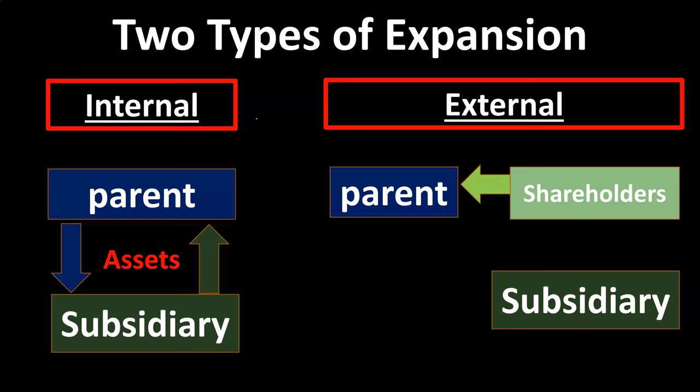We have one organization. The organization wants to grow and expand, possibly into a different section, segment, or a different industry, and therefore they're going to expand in some way, shape or form. Typically, we're thinking of the creation of a subsidiary type of relationship, in which case they might create a separate legal entity — giving assets and possibly liabilities to that newly created separate legal entity.